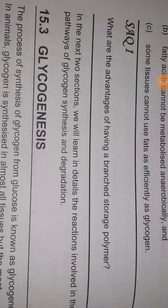Good evening everyone. Let's start question chart number 15, which is Carbohydrate Metabolism 2. The first question is: what are the advantages of having a branched storage polymer? Branching increases the number of non-reducing ends. Since synthesis and degradation of glycogen occur from non-reducing ends, the branched structure allows reactions to take place simultaneously.